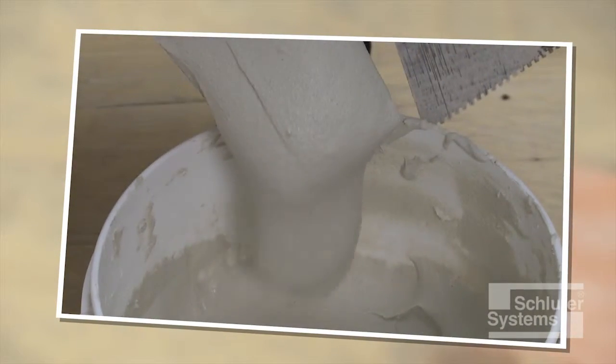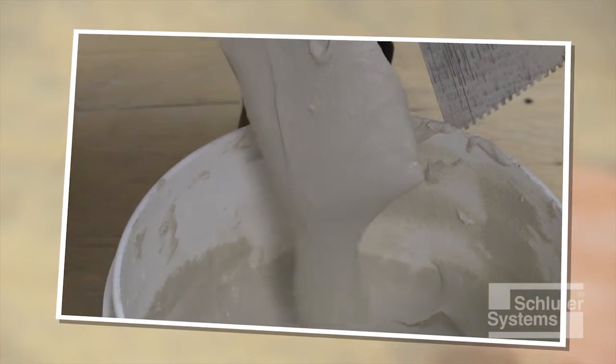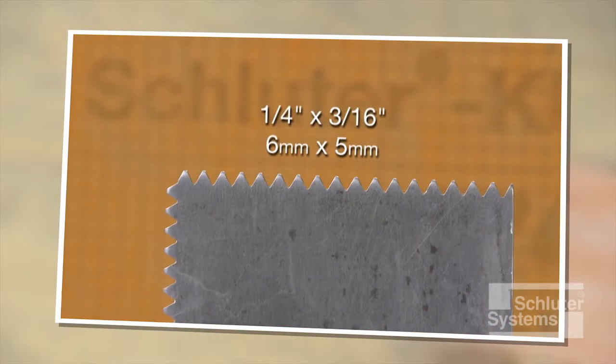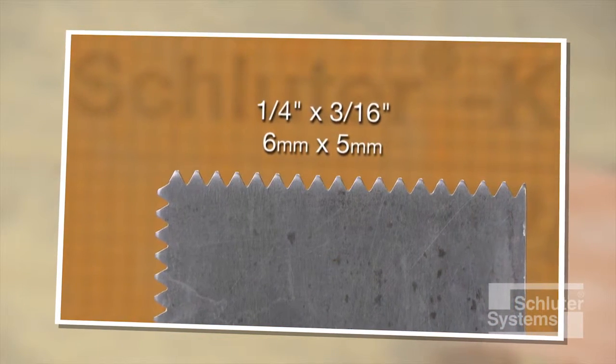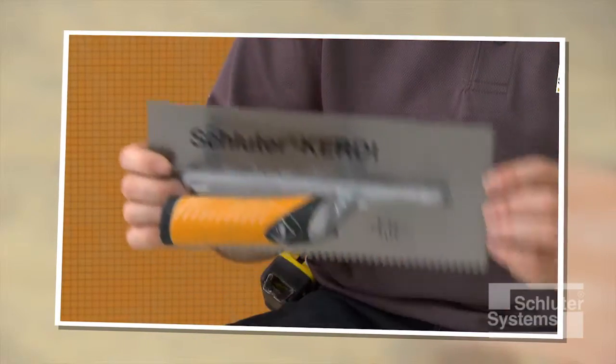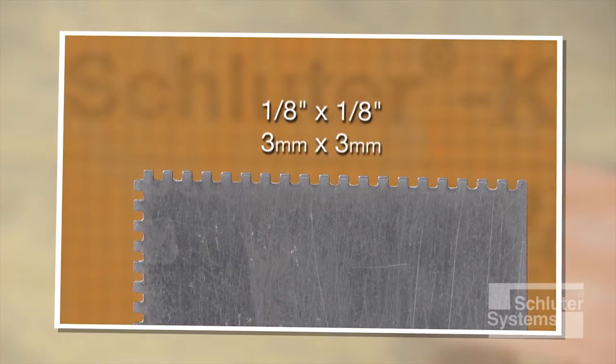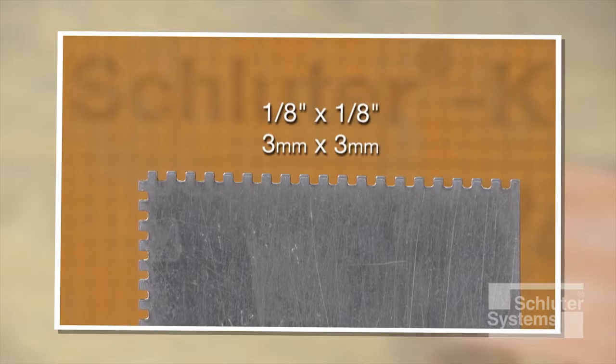The mortar is mixed to a fairly fluid consistency, but still able to hold a notch. A 1.25 inch by 3.16 inch V-notched trowel, or the Schluter-KERDI trowel, which features a 1.8 inch by 1.8 inch square notch design, is used to apply the mortar.